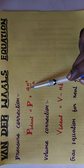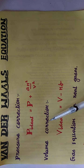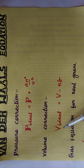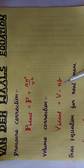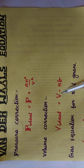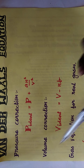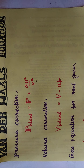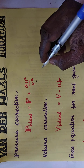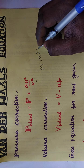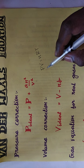Likewise, there is also a correction added to the volume term: V_ideal = V − nb, where 'b' is also a Van der Waals constant. This is the corrected form of volume. By combining these two corrections, we are going to derive the Van der Waals equation. We know the ideal gas equation is PV = nRT.